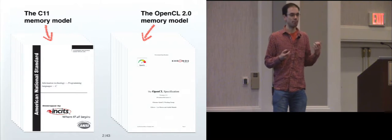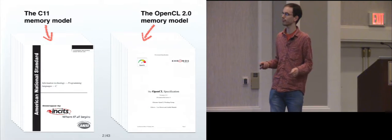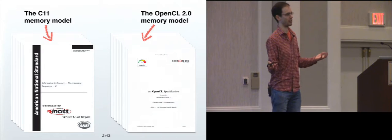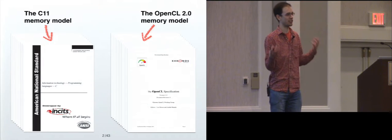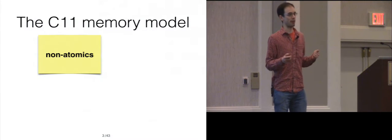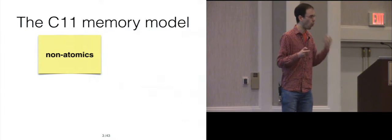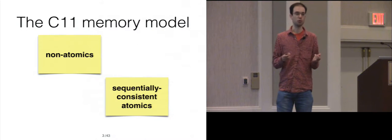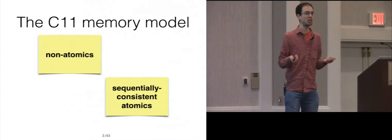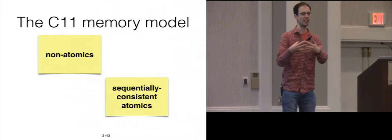What is a memory model? Basically, it's the part of the language specification that tells you: if you load from a shared memory location, what can you get? Like all parts of the language specification, it's a contract between the programmer and the compiler writer, defining the expectations and obligations of both parties. The C11 memory model is really four sub-memory models glued together: the semantics of ordinary non-atomic memory stores and loads; the semantics of various atomic operations, which happen indivisibly. These come in several flavors. Sequentially consistent atomics are the strongest — guaranteed to take effect in some order corresponding to an interleaving of instructions from the threads. They're nice and simple for programmers, but not necessarily efficient.